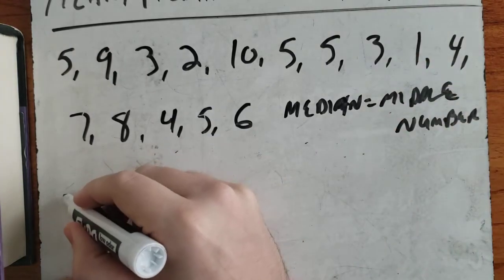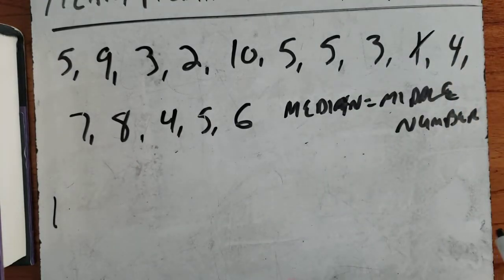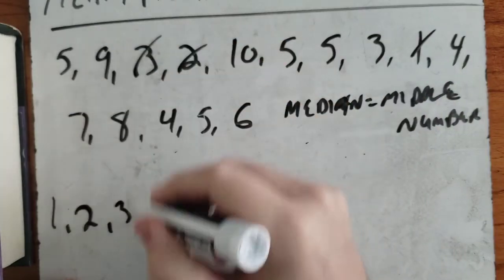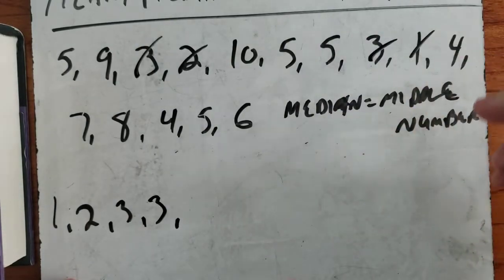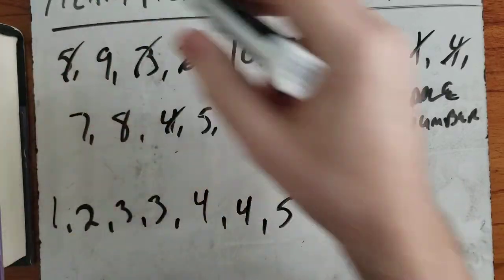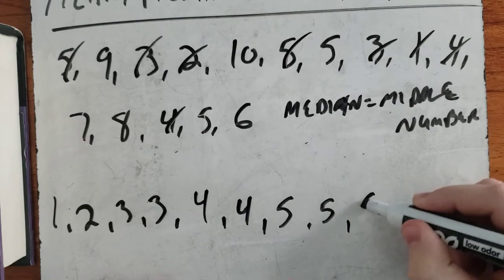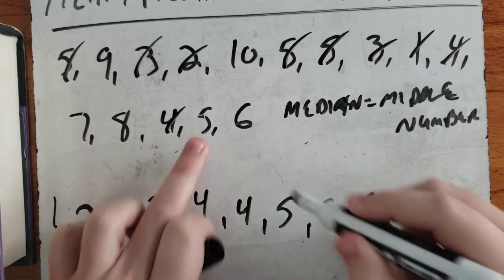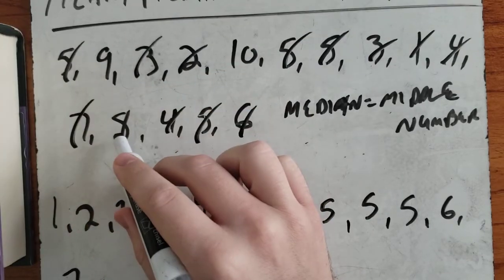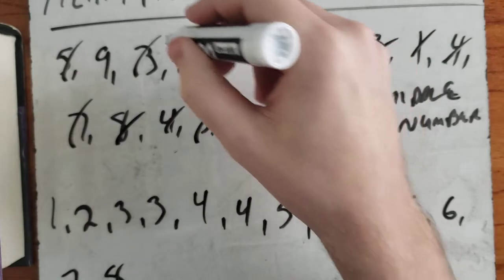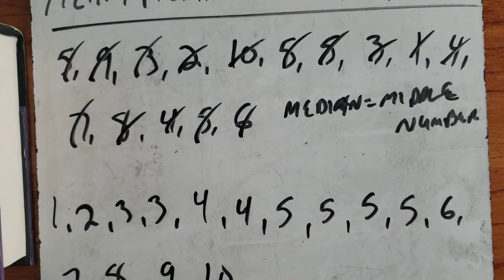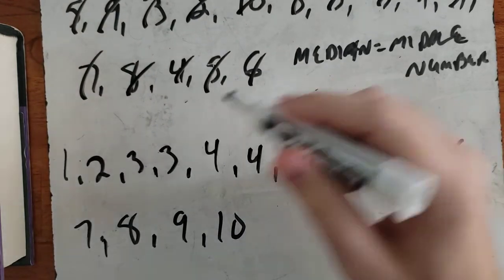So our lowest number is 1. If you want, you can cross them out as you go. We have 1, 2, 3, 3, 4, 4, then some 5s — four of them — then 6, 7, 8, 9, and 10. So we have 15 numbers now ranked from lowest to highest.